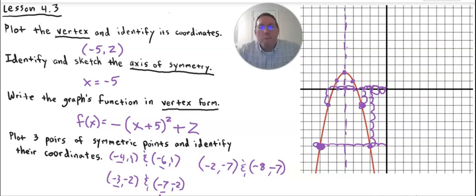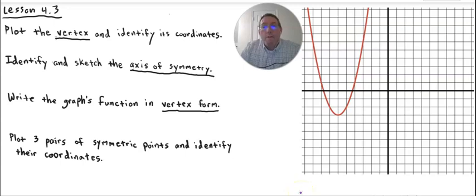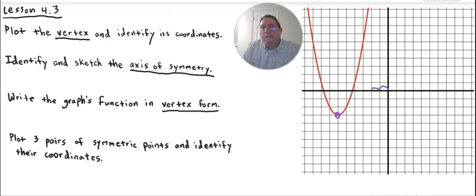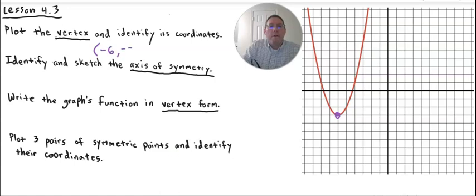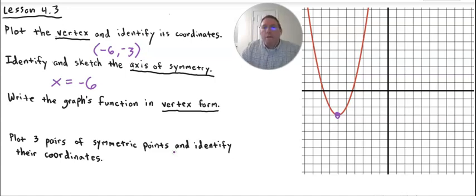Let's try one more example. Here's a new graph — you can pause and try to figure it out yourself. The vertex is right here at (−6, −3). The axis of symmetry is x = −6 because that's the x-coordinate of the vertex. We draw a vertical dashed line right through the vertex as the axis of symmetry.